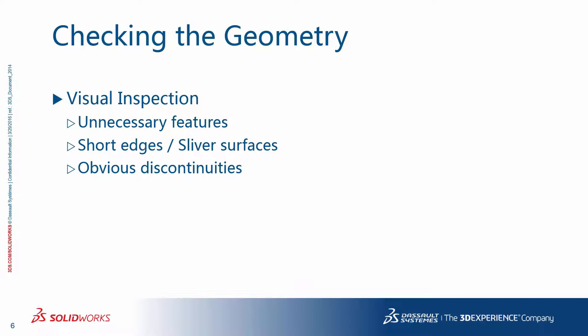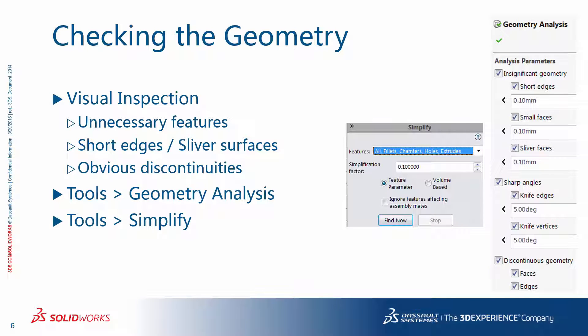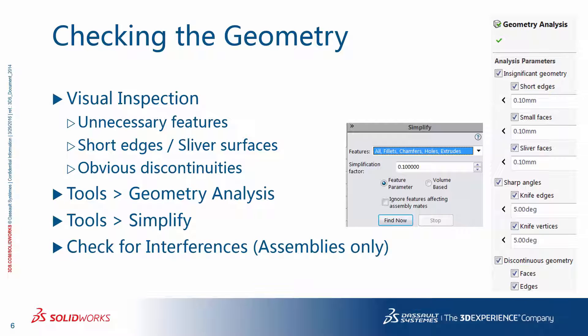On checking the geometry, do a visual inspection. Get rid of unnecessary features. Fix short edges and sliver surfaces, and fix obvious discontinuities as necessary. SolidWorks CAD has powerful tools for checking and modifying geometry, such as geometry analysis and simplify under tools. For assemblies, you can and should also check for interferences.